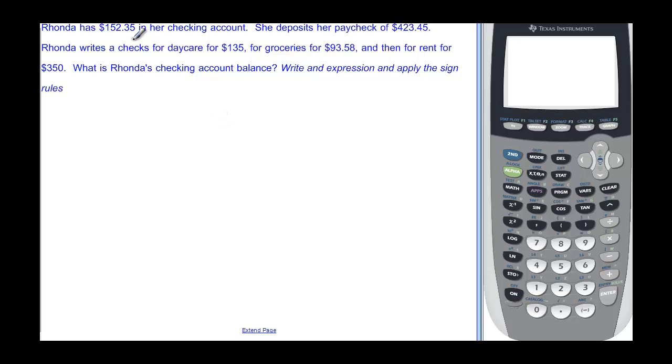Rhonda has $152.35 in her checking account. She deposits, so remember that deposits means she adds money to her account, $423.45. And then she writes checks. And when we write checks, we're going to subtract. So it's $135 that she has to take out of her account and $93.58, and then also $350. So they ask us to write an expression and apply the sign rule so we can find out how much she has in her account after all of that. So think about it.